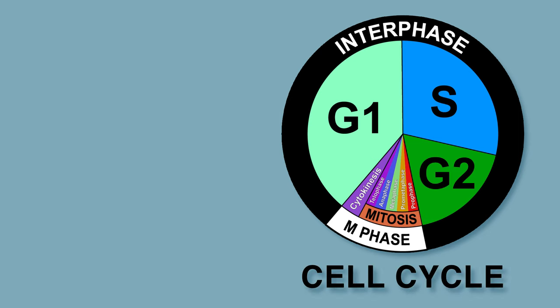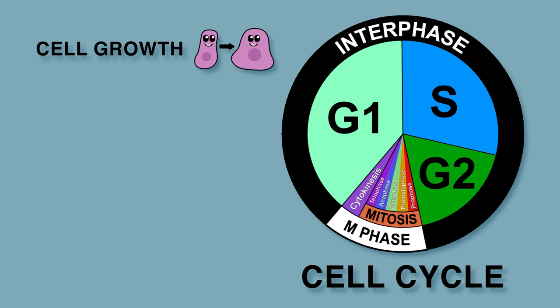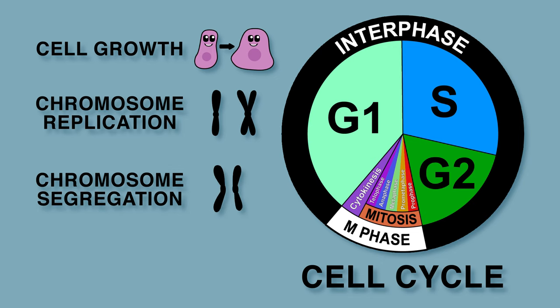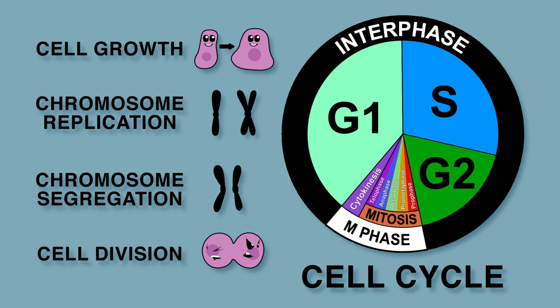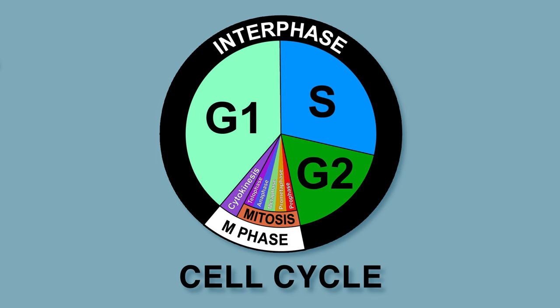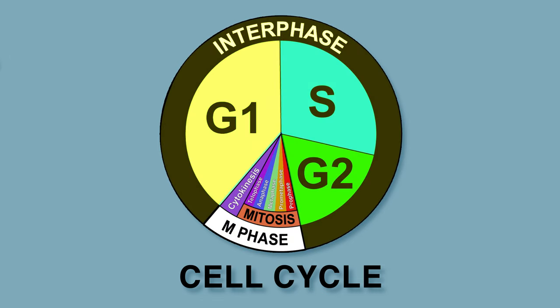The cell cycle involves cell growth, chromosome replication, chromosome segregation, and cell division. These processes take place over the course of the four sequential phases of the cell cycle: G1, S, G2, and M. The first three phases are together called interphase.